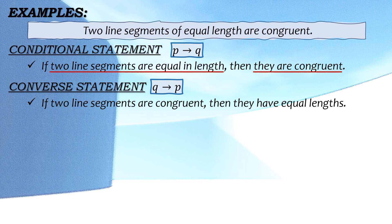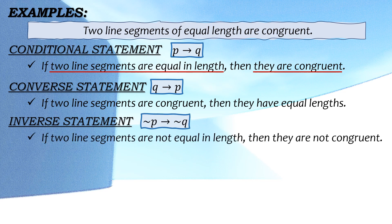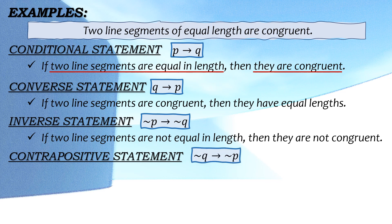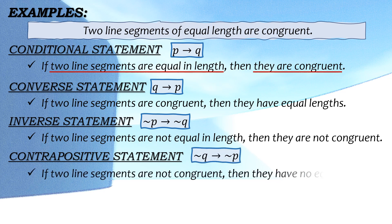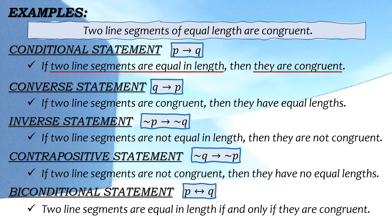Next is the inverse statement. So magiging: if two line segments are not equal in length, then they are not congruent. Next is contrapositive statement — kabaliktaran siya ng inverse. So magiging: if two line segments are not congruent, then they have no equal lengths. And the last is the biconditional statement — dadagdagan lang natin ang words na 'if and only if' yung ating given statement. So magiging: two line segments are equal in length if and only if they are congruent.